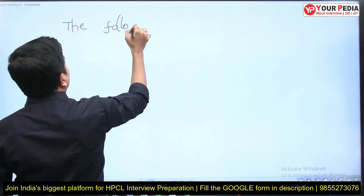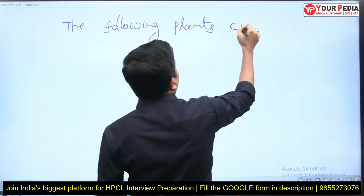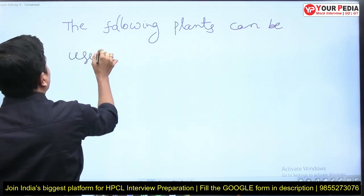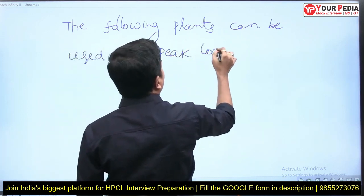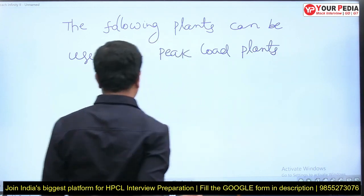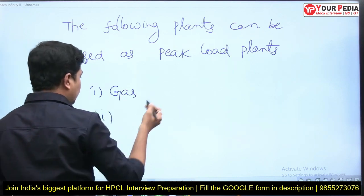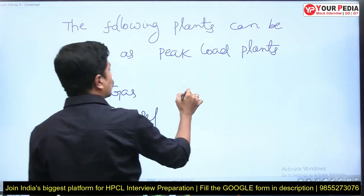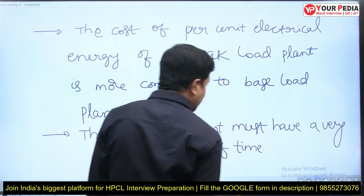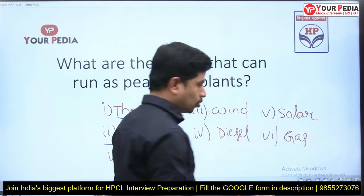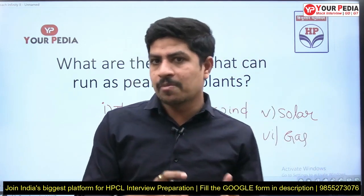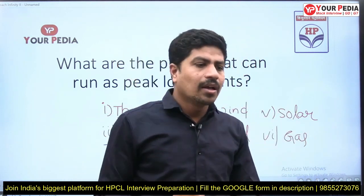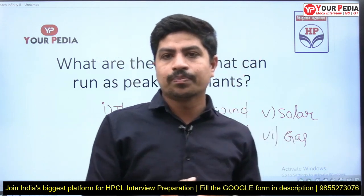So which type of plants are suitable as peak load plants? The following plants can be used as peak load plants: gas or natural gas plants, diesel plants, wind, and solar. There is a reason behind every concept — gas, wind, solar, and diesel are used as peak load plants because they can switch on and off within very less time. Thank you.